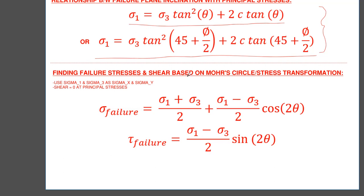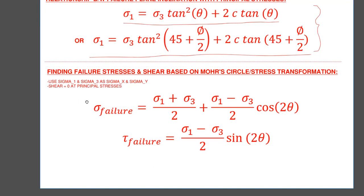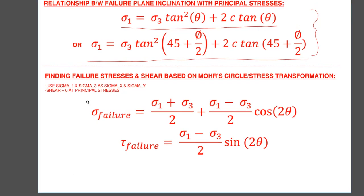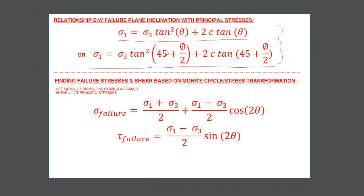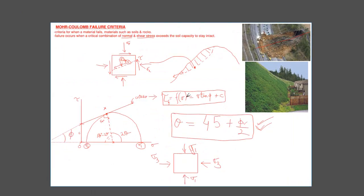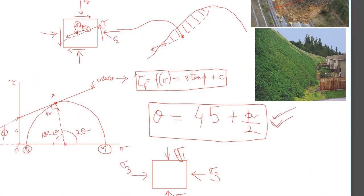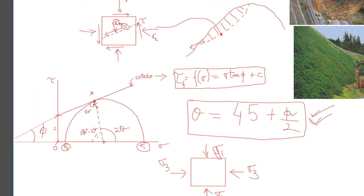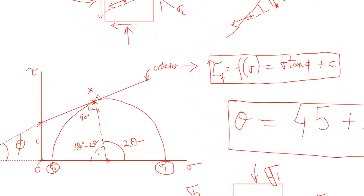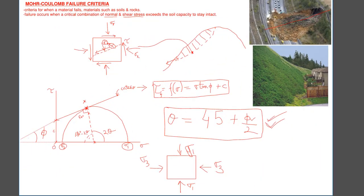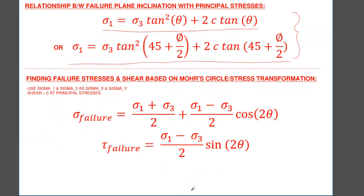Now, typically what people are interested in is they want to find out, given this relationship and given theta equals 45 plus phi over 2, we can use Mohr circle to come up with the orientation. We can know what theta is at the end of the day and know what the failure plane is. But how do we then find out what our stresses are?